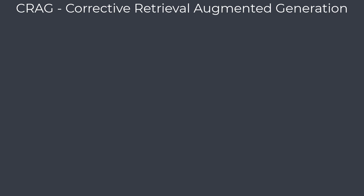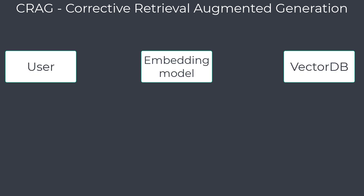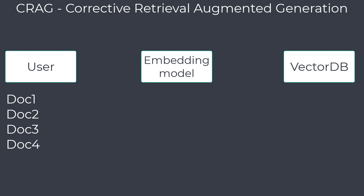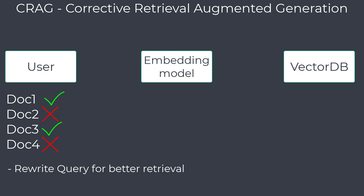So what is self-correcting RAG and why do we need it? Let's say we've got a user who asks a question. The question gets embedded and we make a similarity search against the vector database. We retrieve the top K documents, let's say four. The issue is that we always retrieve four documents no matter what — we don't know if the documents are well suited to actually answer the question. This is why we introduced a self-correcting RAG system where an LLM evaluates each document if it's suited to answer a question with a binary score, yes or no. With that information we can do whatever we want — we can rewrite the query in a way which might be better suited for retrieval, or reduce the list from four to only two documents.